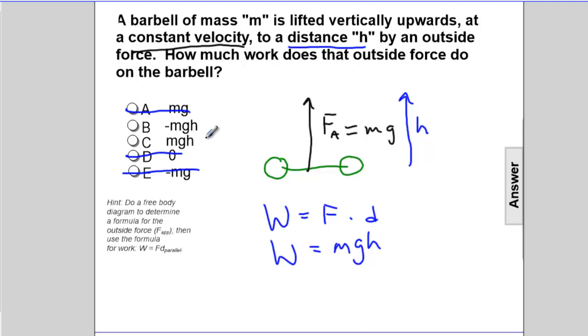So the question is, is it B, negative mgh, negative work being done, or C, positive mgh, positive work being done?